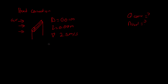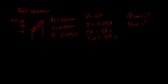I went to the lab and conducted this experiment. I had a voltage of 12 volts and a current of 2.04 amps. We had two temperature readings: T9, which was 26 degrees Celsius — that's room temperature — and T10, which is 158 degrees Celsius, on the surface of our cylinder. T10 is the one getting power, so it's a lot hotter than room temperature.